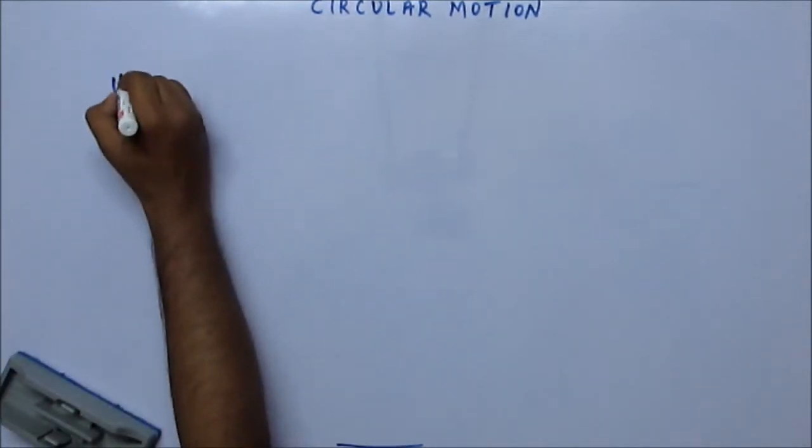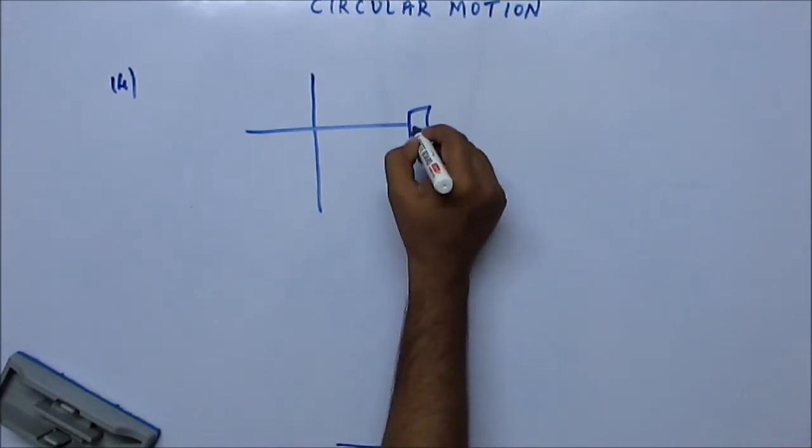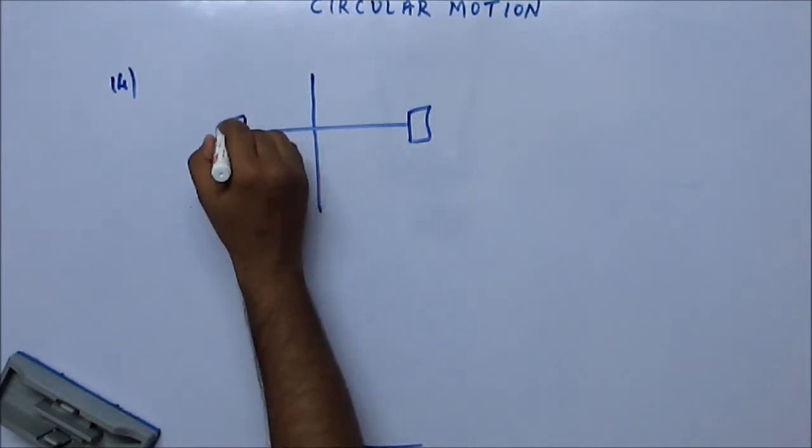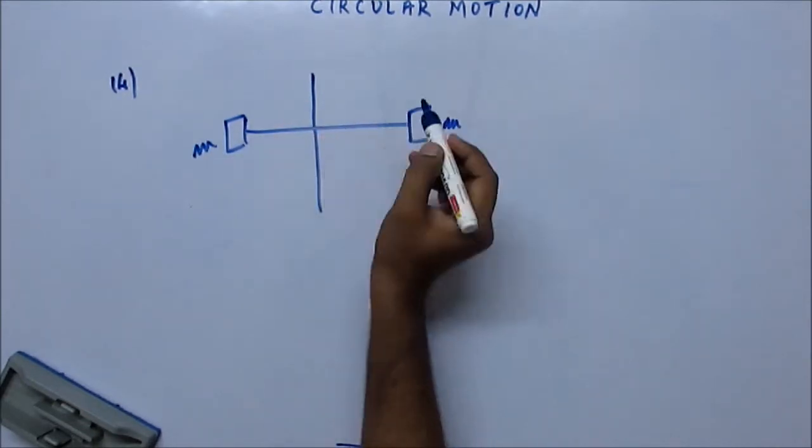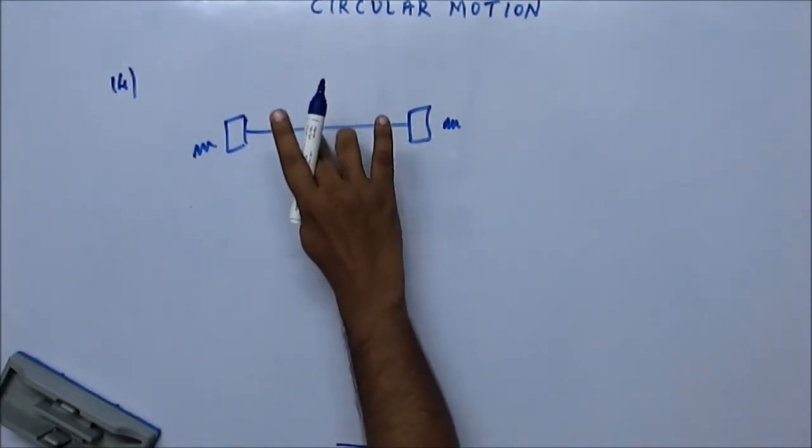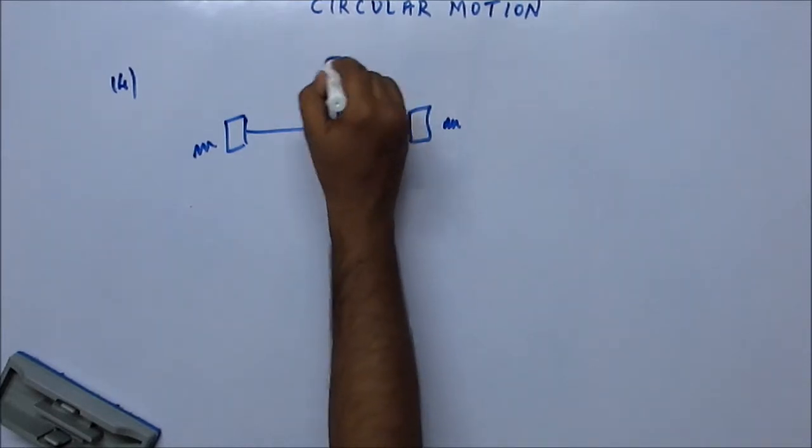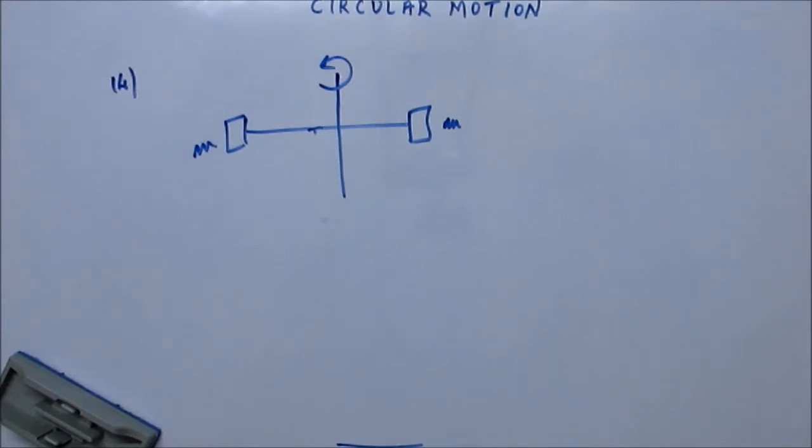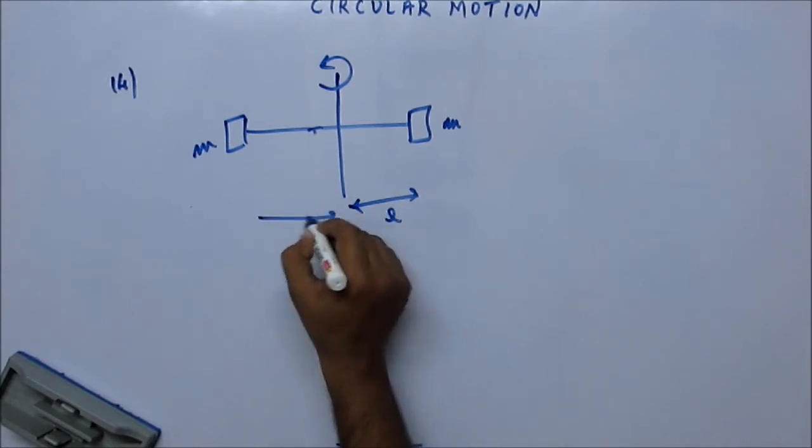Now suppose there is a rod and there are two masses attached to the rod at both ends, and this rod is undergoing horizontal circular motion across a vertical line. This length is L and this is L as well.